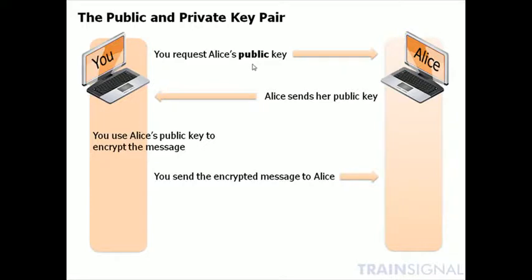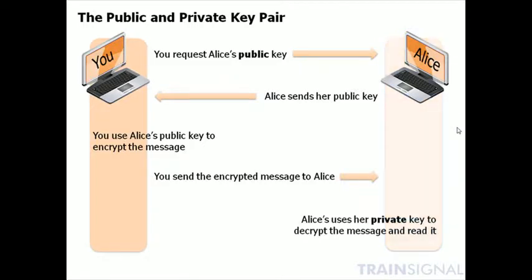Anything encrypted with this public key cannot be decrypted with that same key. It has to be decrypted with the pair to it — the private key — which only Alice has. So she uses that private key to decrypt the message and read it. This is great for confidentiality: nobody can intercept that message and decrypt it because they don't have Alice's private key.